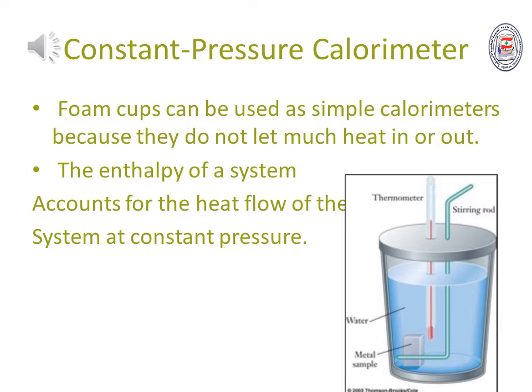The heat of loads for many chemical reactions can be measured in a constant pressure calorimeter similar to the one shown in this figure. In a simple constant pressure calorimeter, a thermometer records the temperature change as chemicals react in water. The reacting substances constitute the system and the water temperature constitutes the surroundings. The enthalpy of a system accounts for the heat flow of the system at constant pressure.